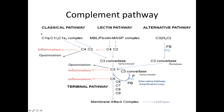The classical pathway has a unique component called C1, which does not divide into C1A or C1B. Instead, it activates C4 and C2, producing C4B and C2B. Together they form C3 convertase, which together with C4 and C2 forms C5 convertase, eventually leading to the MAC complex — the final common pathway.